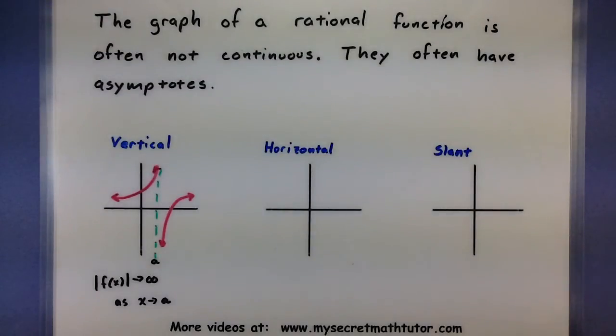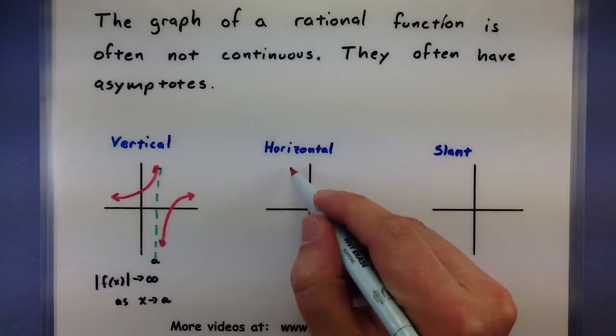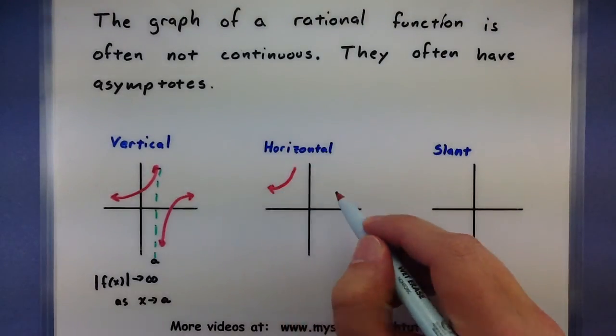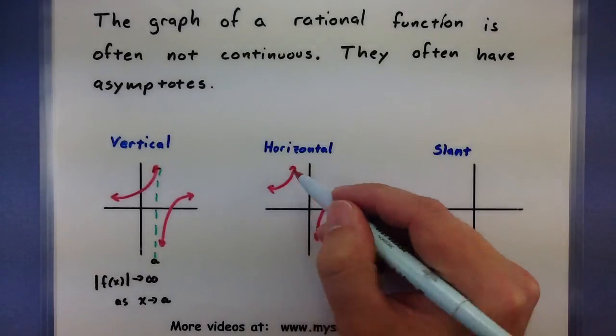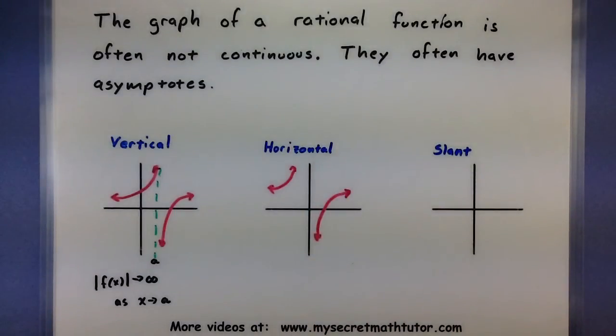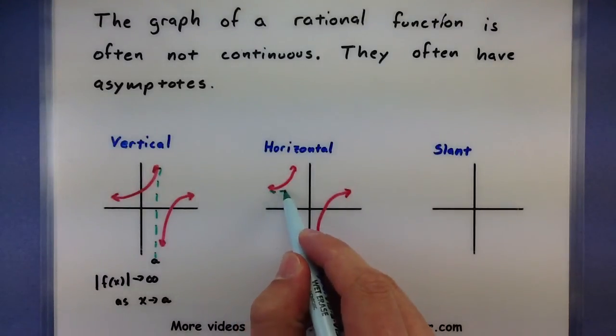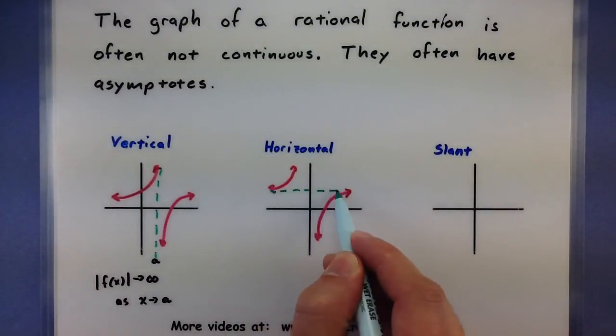Horizontal asymptotes are pretty much the same thing. So let's draw one in here. Only we're more concerned with them horizontally. So let's draw one left and right.